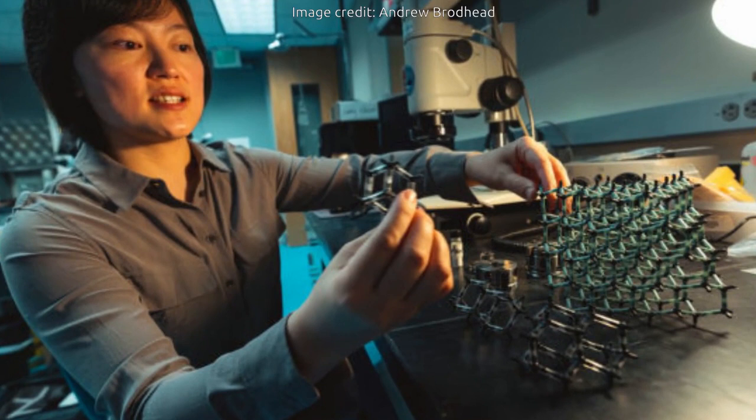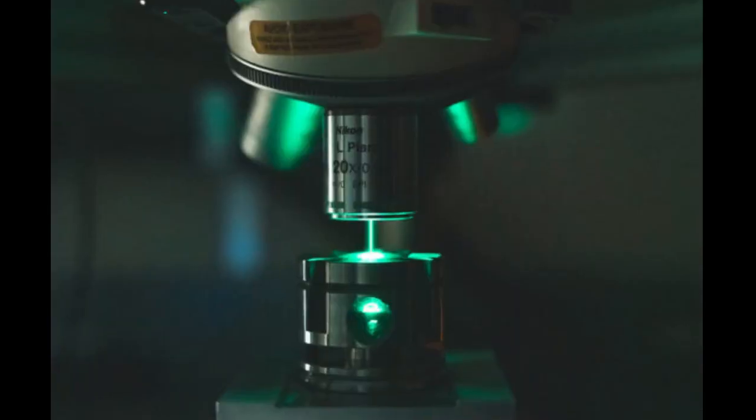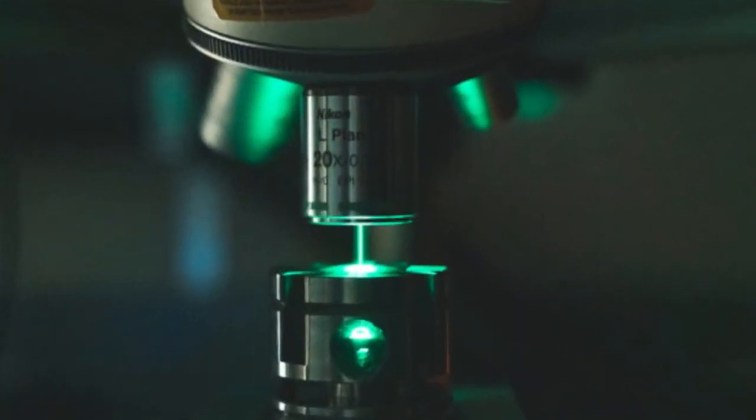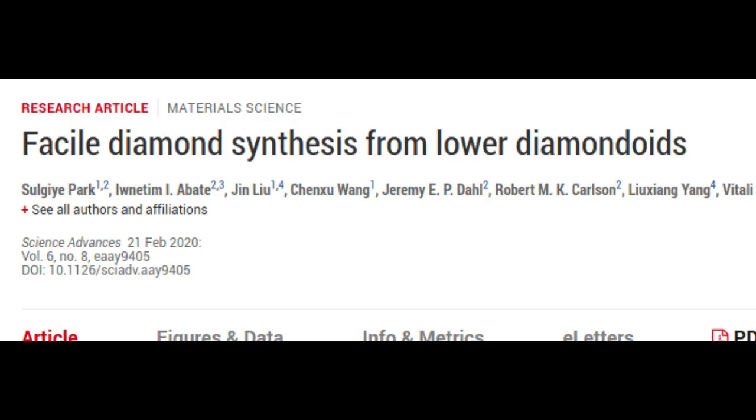Open the chamber and find a new microscopic speck of pure diamond inside. A new study from Stanford University and SLAC National Accelerator Laboratory reveals how, with careful tuning of heat and pressure, that recipe can produce diamonds from a type of hydrogen and carbon molecule found in crude oil and natural gas. This study is published in the journal Science Advances.